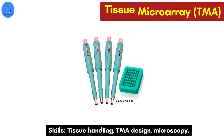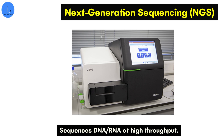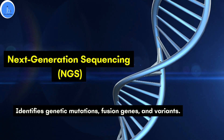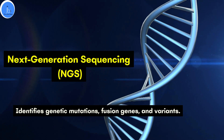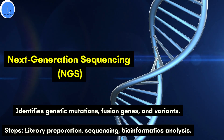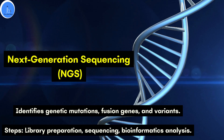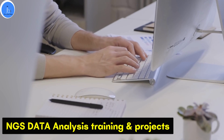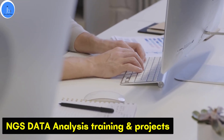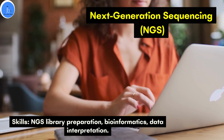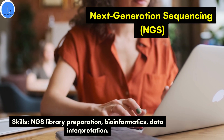The next significant technology is next-generation sequencing, which sequences DNA or RNA at a high-throughput level and can help in identifying genetic mutations, fusion genes, and variation analysis. The general steps required are library preparation, sequencing, and bioinformatics-based data analysis. We have a special program related to NGS and programming for biologists. The skills required are NGS library preparation, bioinformatics, and data interpretation.